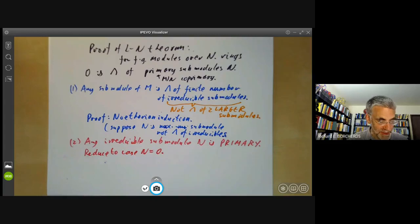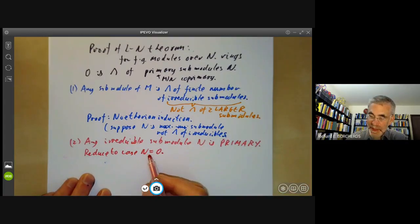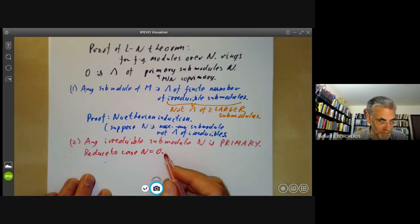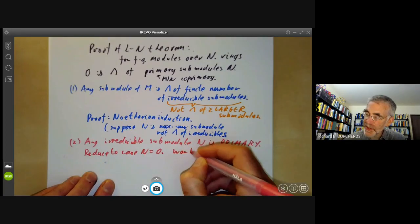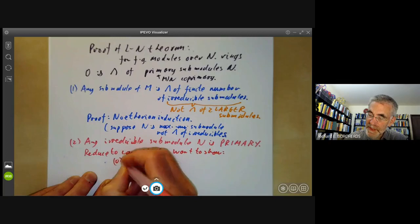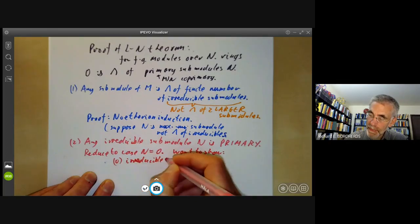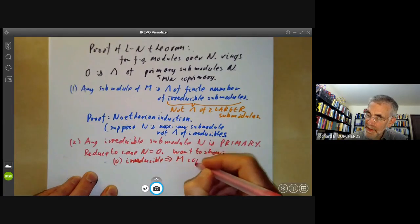So we have to show that if naught is irreducible, this implies m is co-primary. We want to show that if the submodule naught is irreducible, this implies m is co-primary.